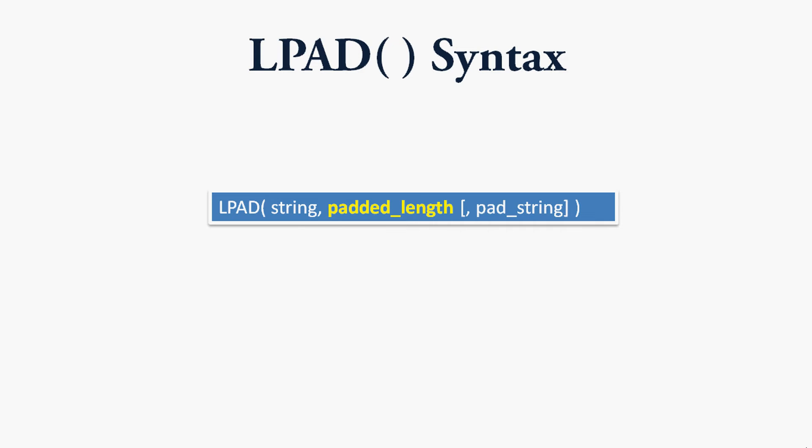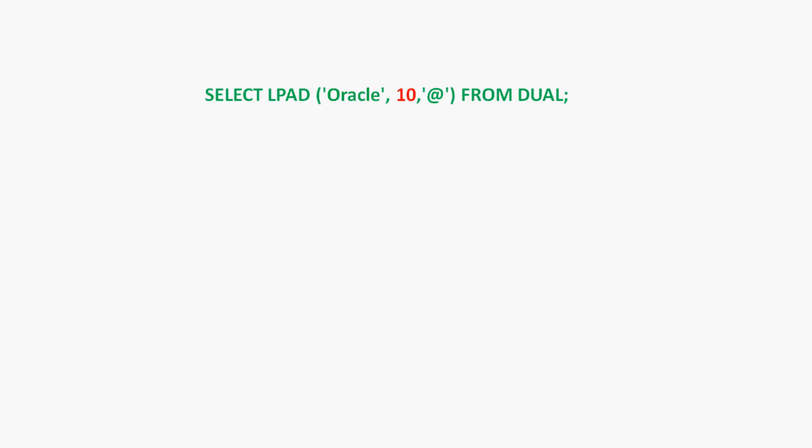The next parameter is pad_string — this is an optional parameter where we specify the string that will be padded to the left side of the first string. Here we can see an example: SELECT LPAD('oracle', 10, '@right') FROM DUAL. Here 'oracle' is our string, 10 is the pad length, and '@right' is the pad string.